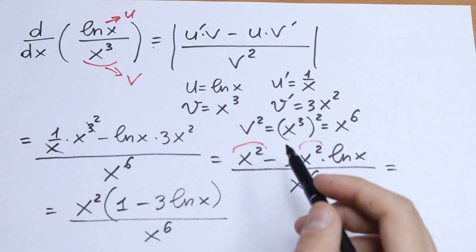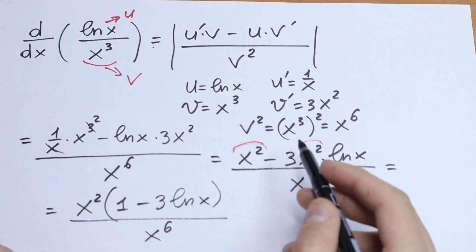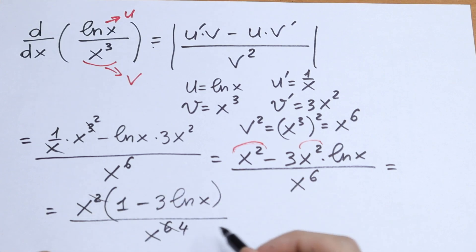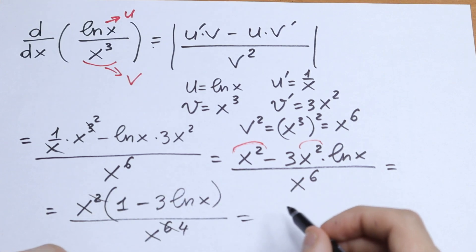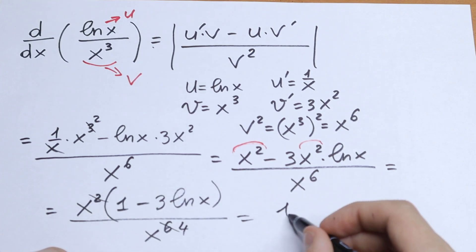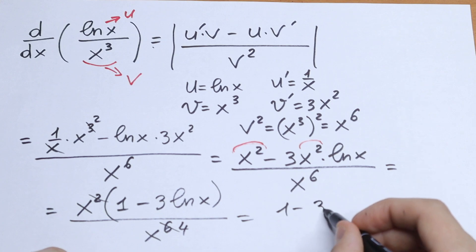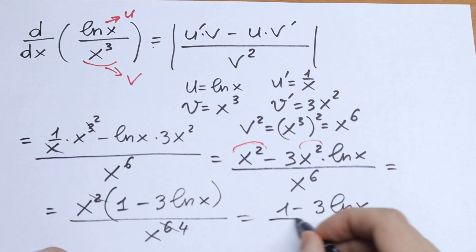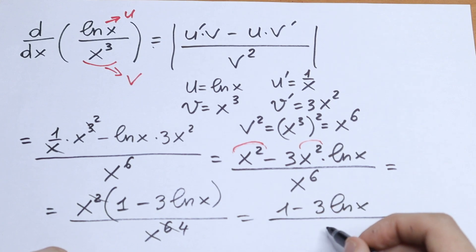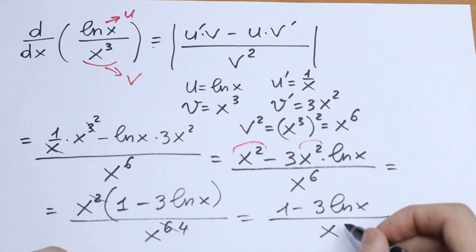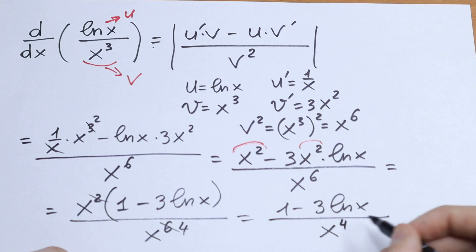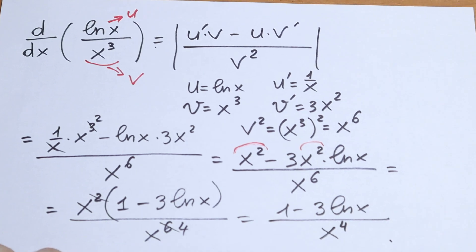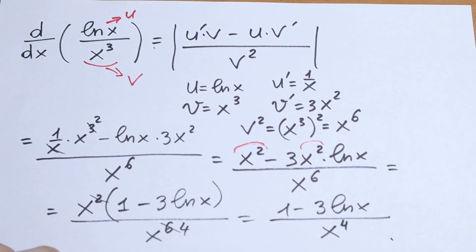We cancel x squared from x to the sixth power, leaving x to the fourth power. So the final answer is 1 minus 3 natural log x, over x to the fourth power. And this is our derivative of this function.